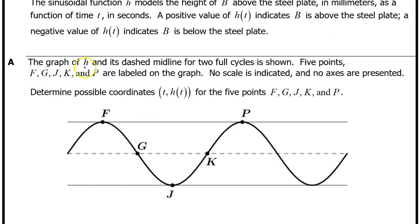Part A, the graph of h and its dashed midline for two full cycles is shown. Five points F, G, J, K, and P are labeled on the graph. No scale is indicated and no axes are presented. Determine possible coordinates for the five points F, G, J, K, and P.